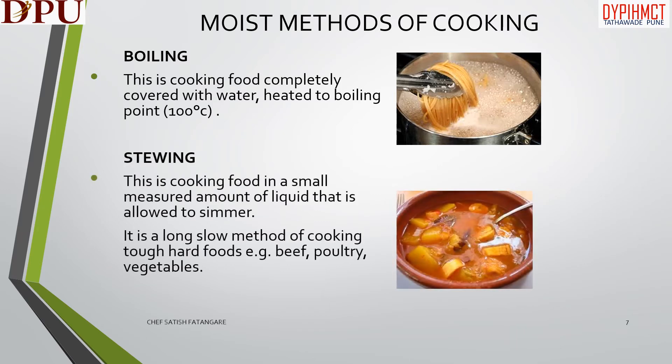The next cooking method is stewing. This is cooking food in a small measured amount of liquid that is allowed to simmer. It is a long slow method of cooking tough hard foods, for example beef, poultry, and vegetables.